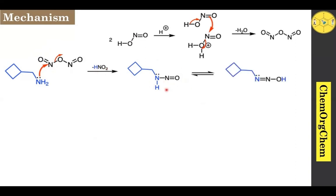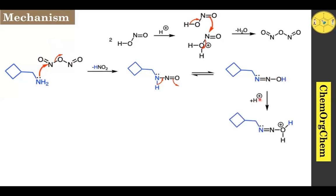This intermediate quickly tautomerizes to give a tautomeric form. The electron shifts and then picks up a hydrogen atom, which generates the tautomerized form. After that, this will quickly be protonated by acid — the hydroxy group is readily protonated to give the protonated form.